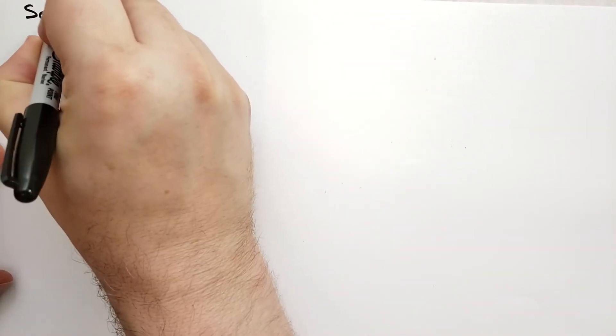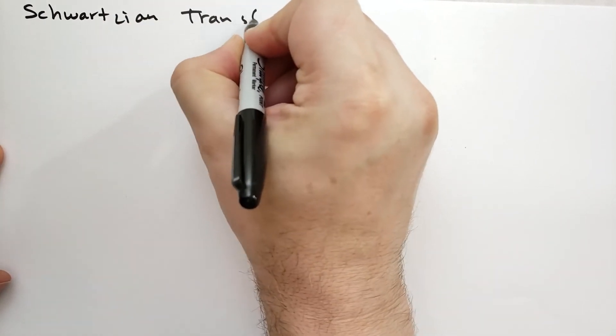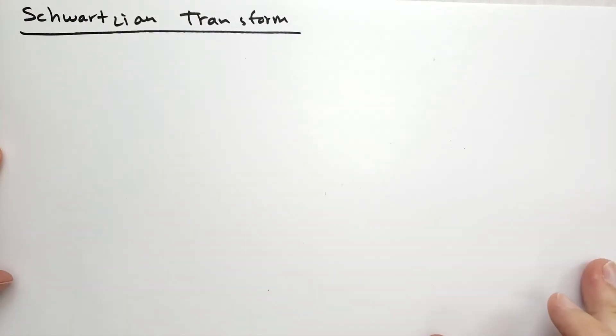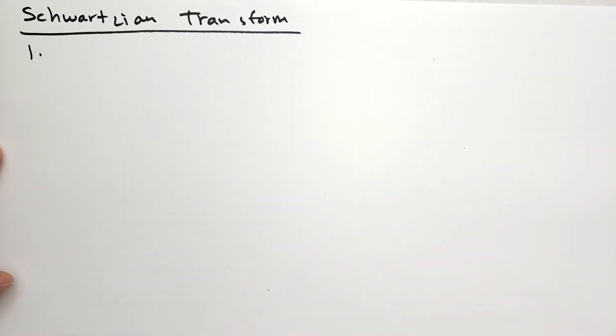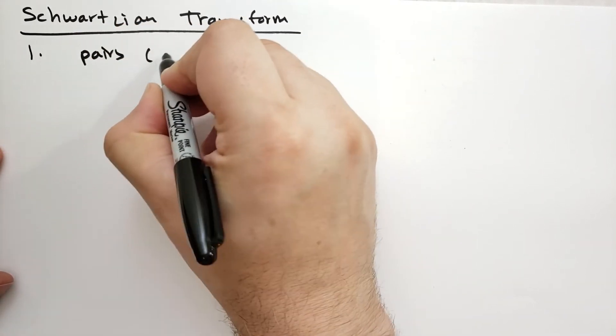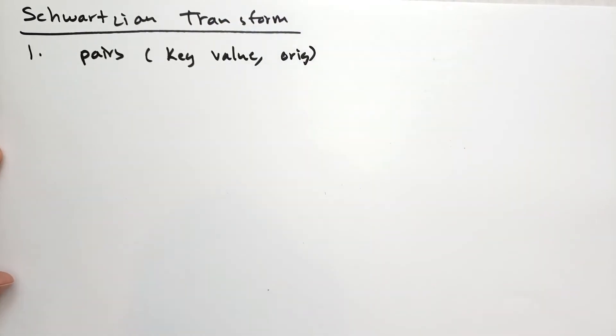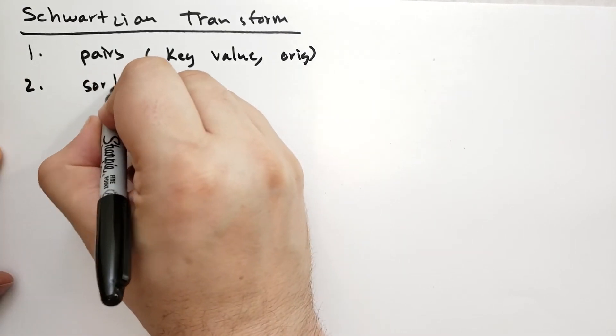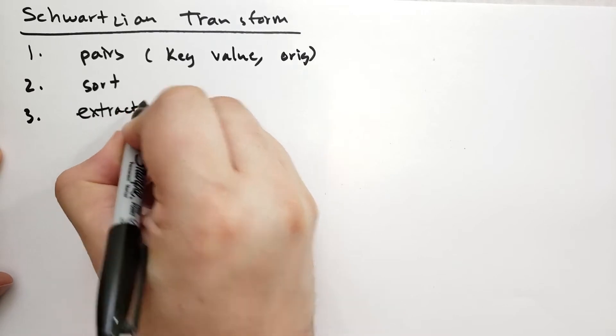The Perl programming language has a similar way to do this called a Schwartzian transform. The way the Schwartzian transform works is you first apply the key function and generate a sequence of pairs where you have the key value and the original value in those pairs. Next you sort that list and finally you extract the original value.